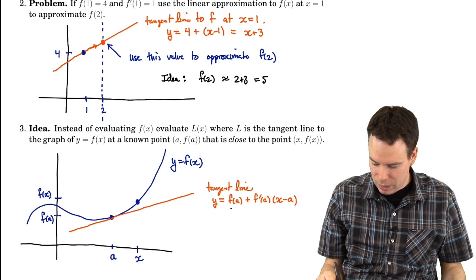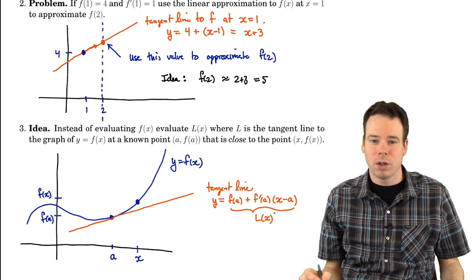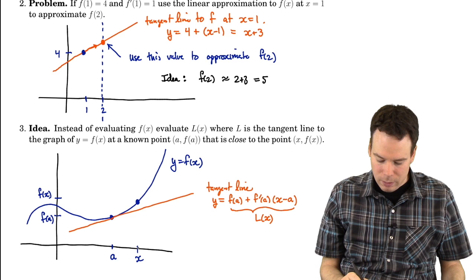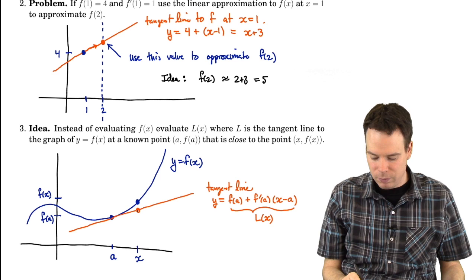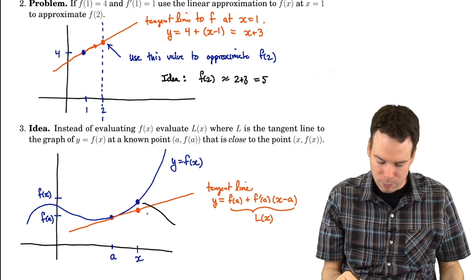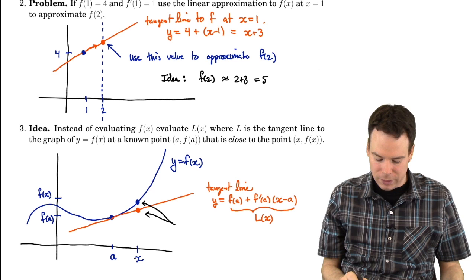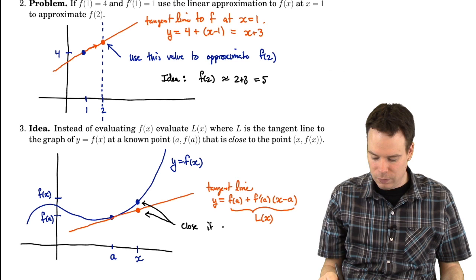We've got this linear function describing the tangent line, and we're going to give it a name: L(x), capital L because it's a linear function. We're going to call this the linearization of f at a. Now what's the function value at x? We have a corresponding point on the tangent line, and the big idea is that these two should be close — the point on the tangent line and the point on the curve — if x is close to a.